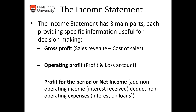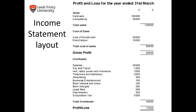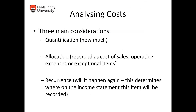Then we move forward to operating profit. We get there by taking gross profit minus all operating expenses like heating, light, labour expenses, maintenance, etc. After that, after operating profit, we deduct our interest and other taxes. Then we will have net income, or profit for the year, which is the after-tax figure.